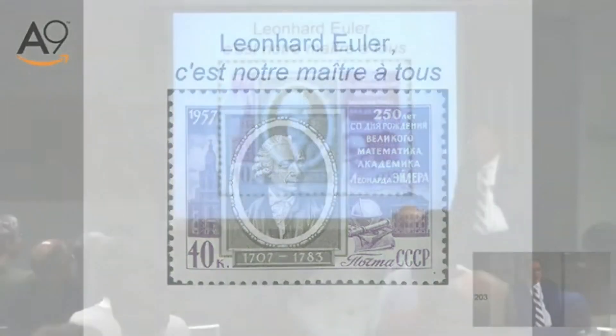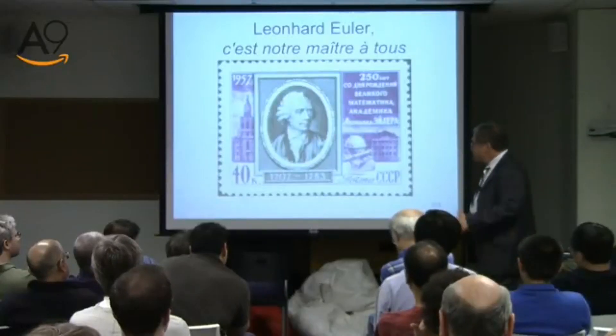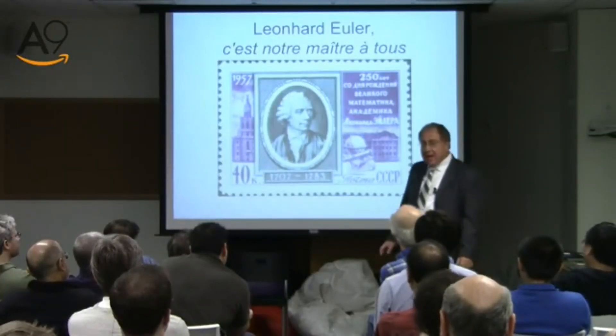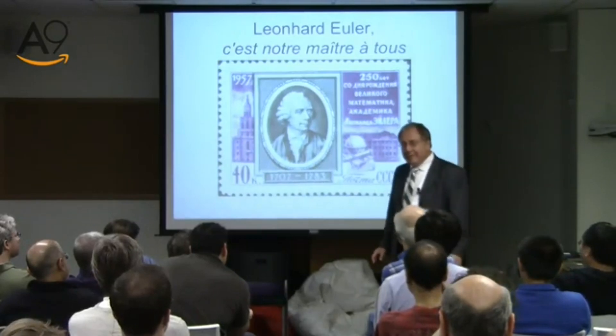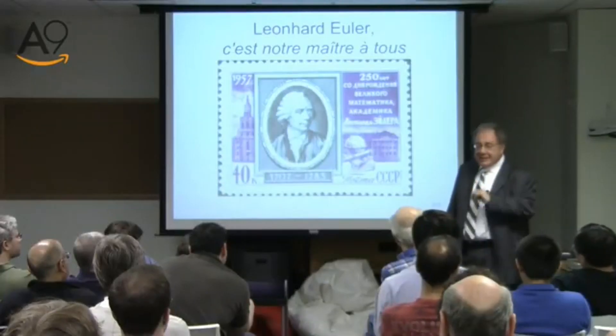In some sense, every mathematician — everybody who knows anything about mathematics nowadays — has to acknowledge a sort of eternal debt of gratitude to Euler. He is one of the most remarkable people who did just about anything imaginable. He was born in Switzerland, which at that time was a very important center of mathematical studies, because they had a group of brothers called the Bernoulli brothers. The most great thing they did was teach young Euler.